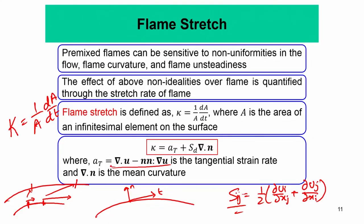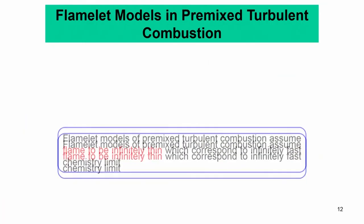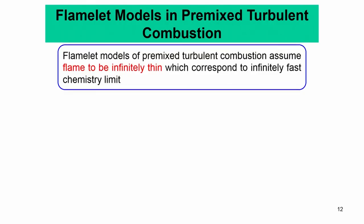The second contribution to flame stretch is curvature. For example, in a spherical expanding flame, even without fluid non-uniformity, the curved flame segment grows larger over time due to curvature, thereby causing stretch. So flame stretch — whether positive (increasing area) or negative (decreasing area) — is quantified by the tangential strain rate plus the flame speed times the curvature. In the next class we will return to a discussion of the different models for turbulent combustion. Thank you.